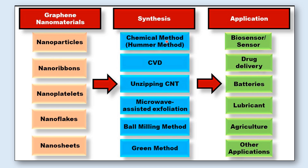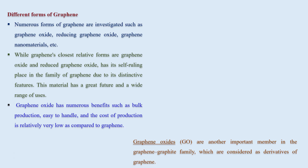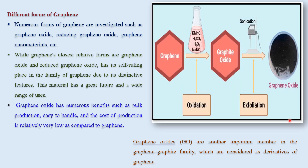These are the synthesis techniques by which we can synthesize graphene via graphite: chemical methods, chemical vapor deposition method, unzipping carbon nanotubes, microwave-assisted exfoliation method, ball milling method and green method. There are various forms of graphene also — numerous forms can be investigated such as graphene oxide, reduced graphene oxide and graphene nanomaterials.